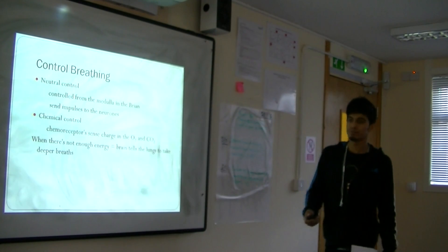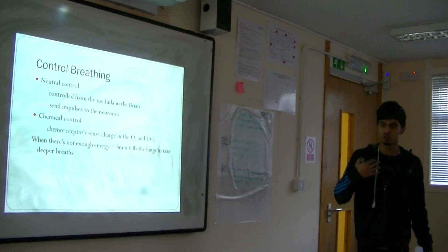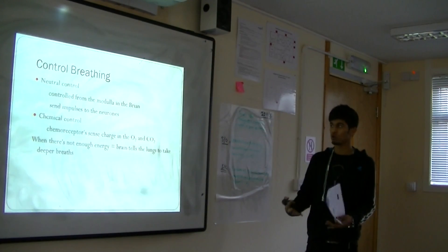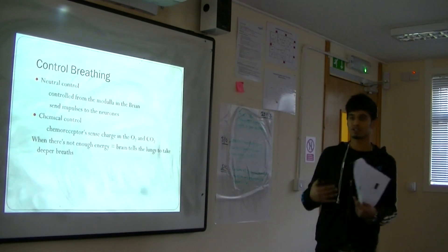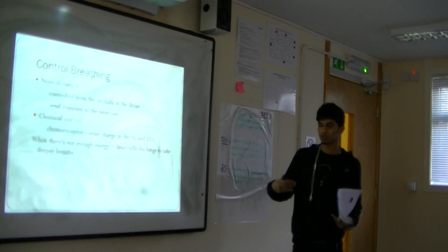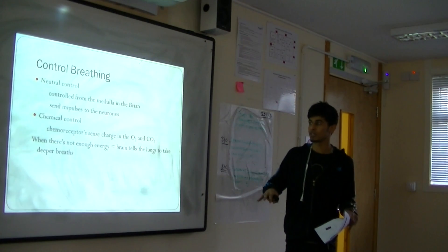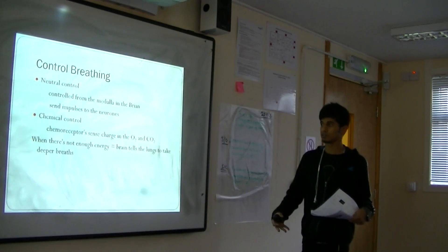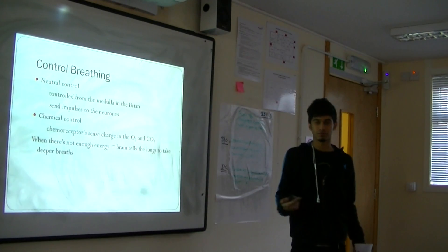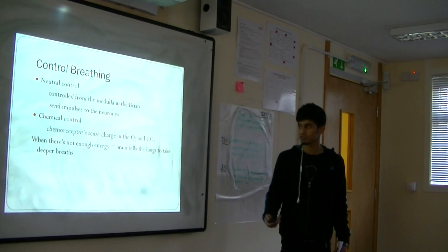Control of breathing: neural control comes from the brain. Within the brain there is something called the medulla, and it sends impulses through our neurons, telling the body what to do. For example, when doing a short-distance event you need more oxygen, and the medulla tells the body to pump faster or slower depending on the exercise. Chemical control is when the body detects changes in CO2 and O2 levels. When there isn't enough oxygen, the brain tells the body to breathe more or breathe less, depending on the activity.